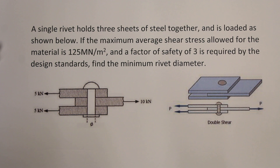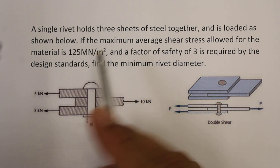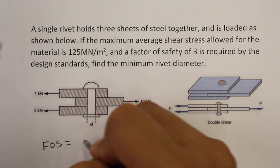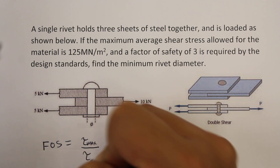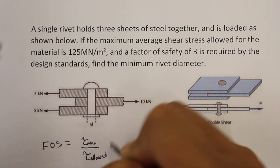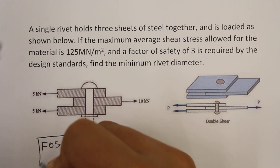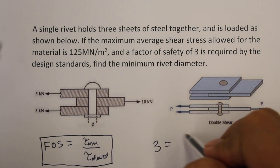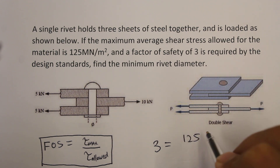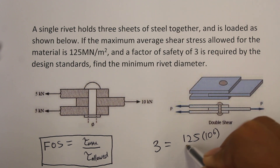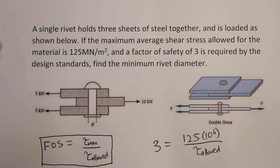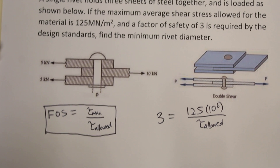The first thing we're going to do is find the allowable shear stress for that section. We have the relationship: factor of safety equals tau max divided by tau allowed. So we can write three equal to tau max, which was given to us as 125 mega pascals, divided by the allowed stress, and then we can find out the value of tau allowed.